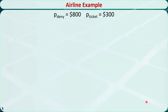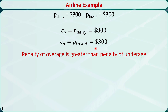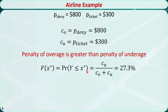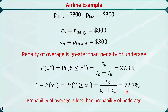The cost of denied boarding for each customer is $800 and the ticket price is $300 per seat. The unit overage cost CO equals the cost of denied boarding, $800. The unit underage cost CU equals the ticket price, $300 per seat. We can see that the overage penalty is greater than the underage penalty. Using these formulas, the overage probability is equal to 27.3% and the underage probability is equal to 72.8%. The probability of overage is less than the probability of underage.